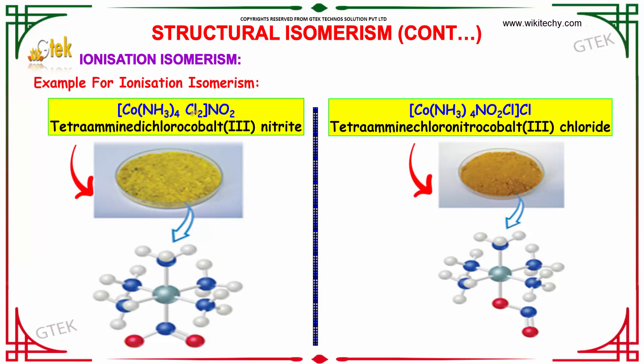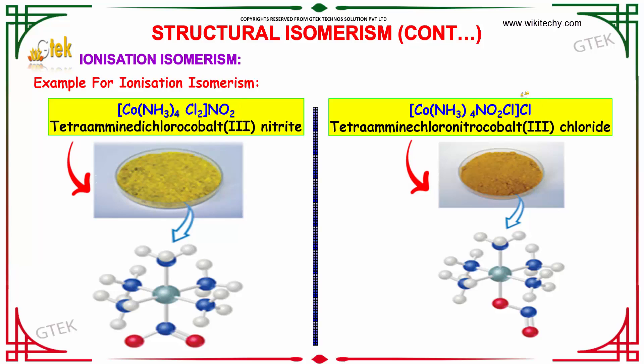Co(NH3) with Cl2 in and NO2 out; over here, NO2 is in and Cl is out. This illustrates another example of ionization isomerism.